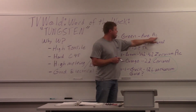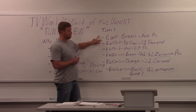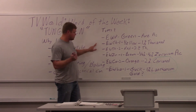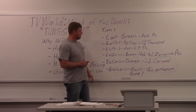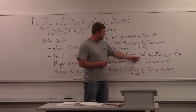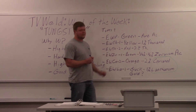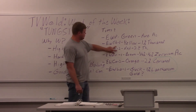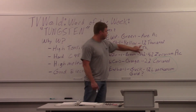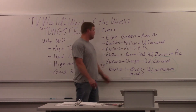Pure tungsten is color-coded green and is used for AC welding — so if you're welding aluminum, you'll use pure tungsten. There's also EWZr (zirconiated tungsten), which has a quarter to a half percent zirconium added — those are your two AC tungsten electrodes. The most common electrode for DC welding is EWTh-2, which is red — that's two percent thoriated. There's also EWTh-1, which is yellow — one percent thoriated.